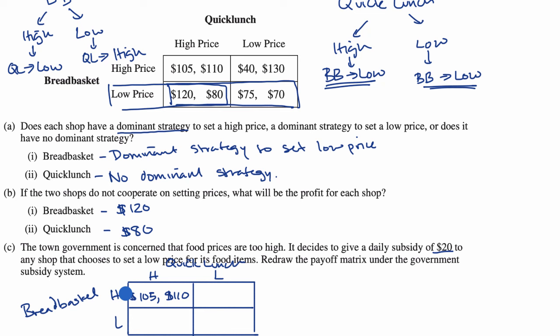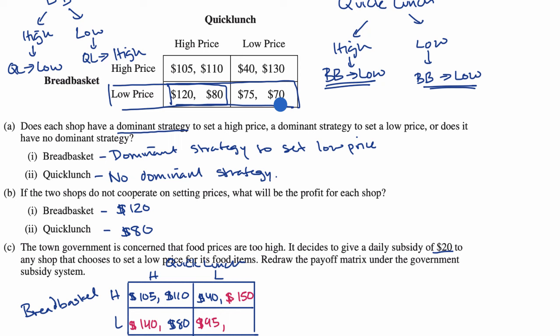If Breadbasket goes low and Quick Lunch goes high: Breadbasket earns $120 plus the $20 subsidy equals $140, while Quick Lunch gets no subsidy and still makes $80. If both go low, both receive the $20 subsidy: Breadbasket makes $75 plus $20 equals $95, and Quick Lunch makes $70 plus $20 equals $90.